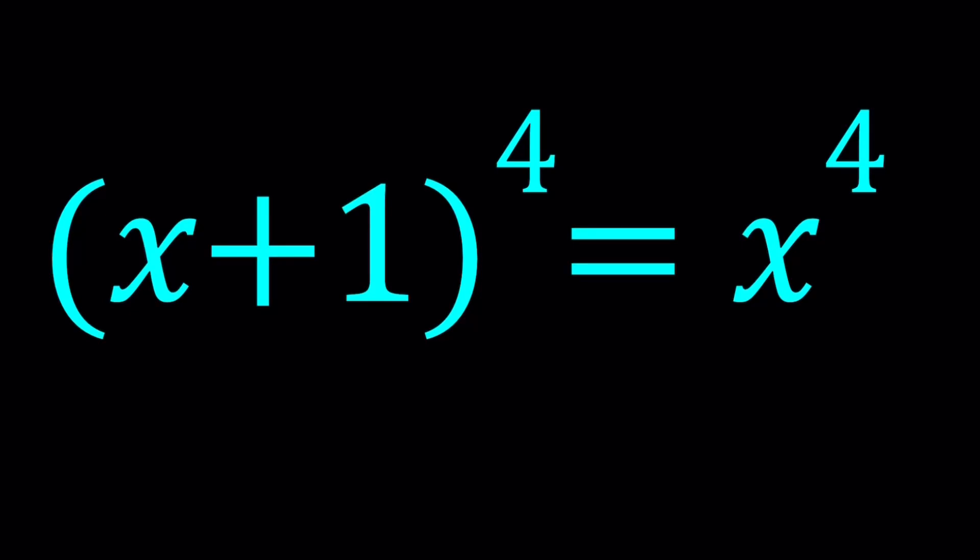Hello everyone. In this video we're going to be solving a polynomial equation. We have x plus 1 to the 4th power equals x to the 4th power, and we're going to be solving for x values. I'm going to be presenting three methods, and I'll also show you the results from Wolfram Alpha and a graph at the end. So let's get started.